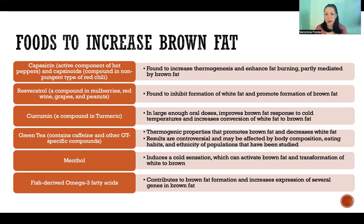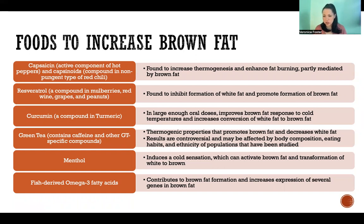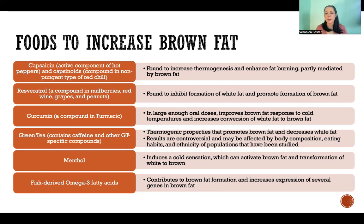Green tea is an interesting one because caffeine, for one, has thermogenic properties, so anything with caffeine is going to help to some extent. But green tea also contains other green tea-specific compounds. Both contribute to thermogenic properties that promote brown fat and decrease white fat. However, the results of these studies have been controversial. These have been studied in humans, which is a step up from animal studies, but because of the populations studied, there's debate about whether body composition, eating habits, or ethnicity might influence the results.